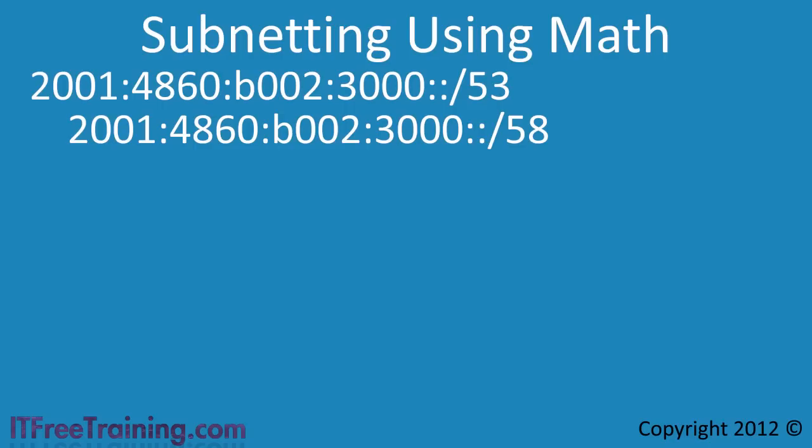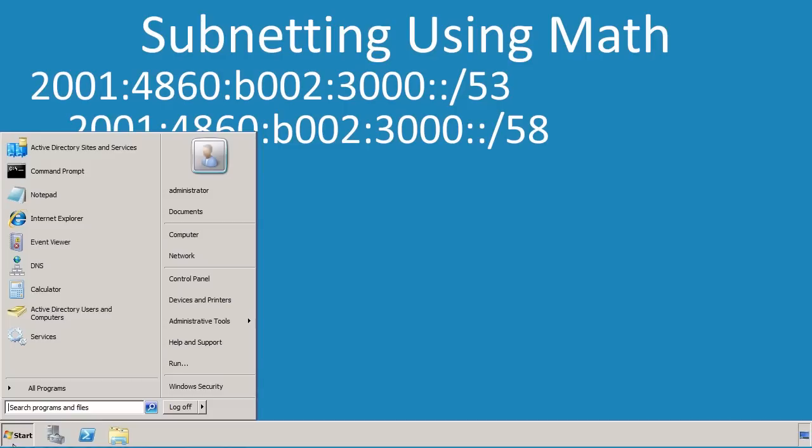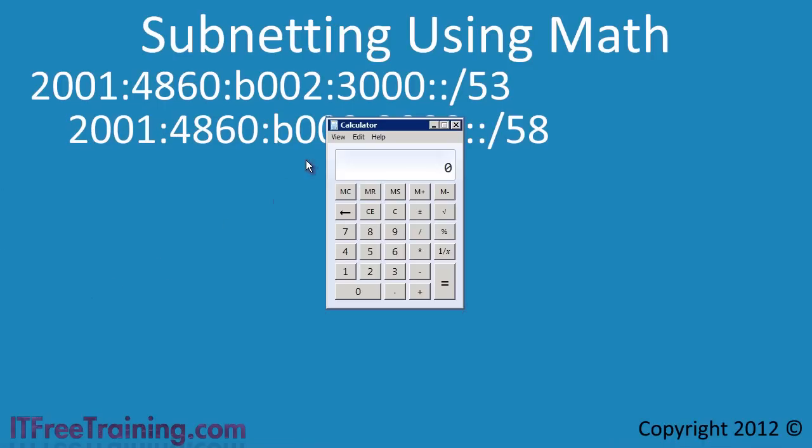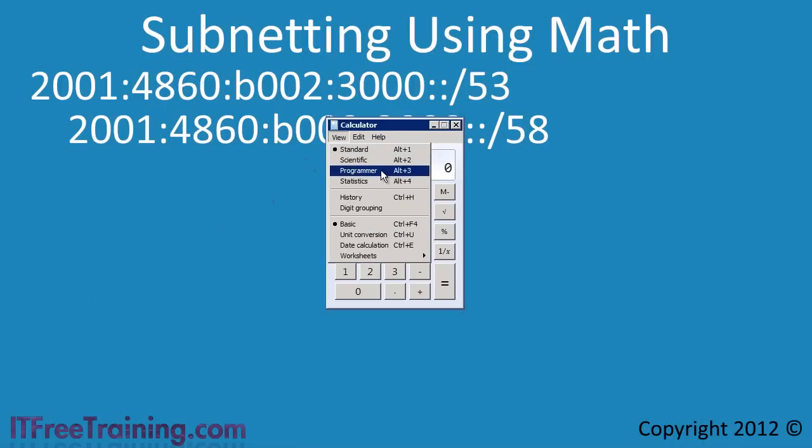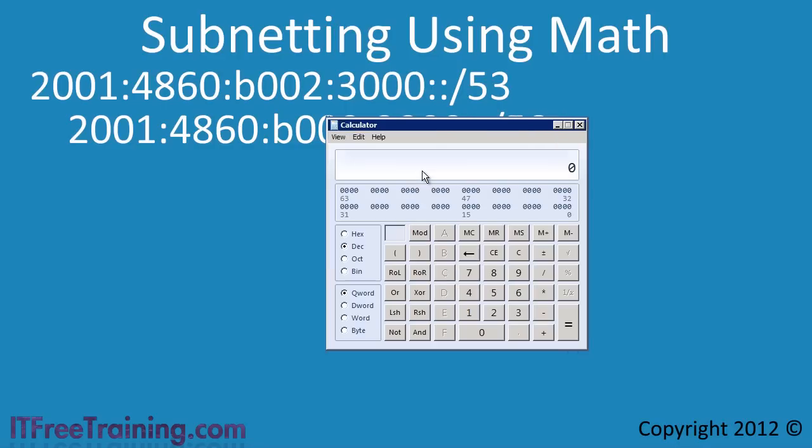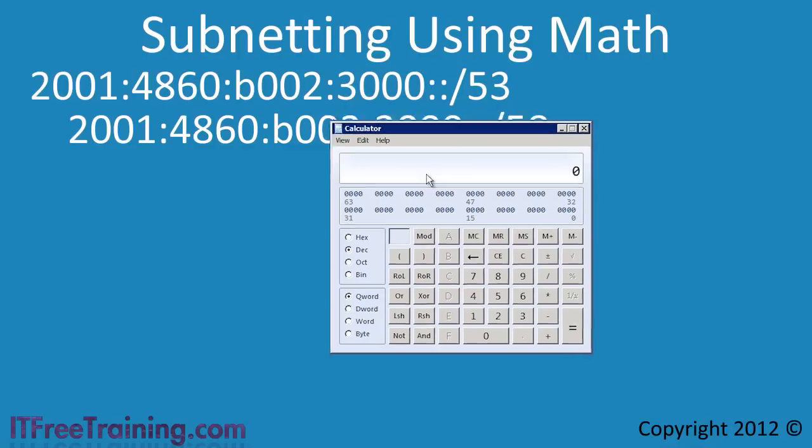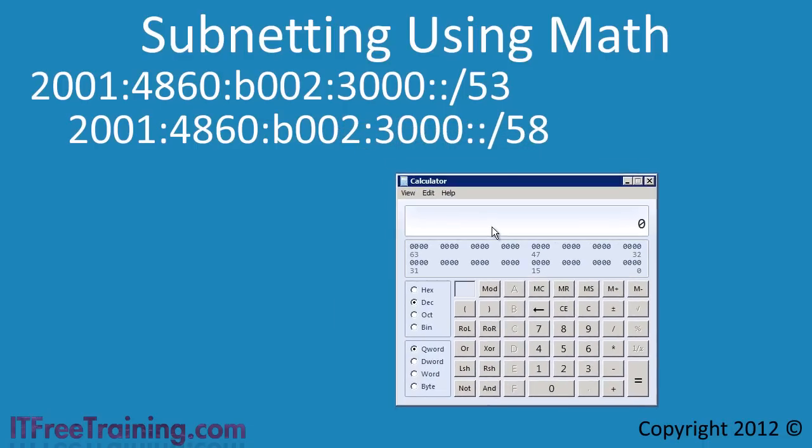In your exam you may have access to the windows calculator. Some exams allow it and some do not. If you do have access to the windows calculator there is a very fast way of working out this value. If I open windows calculator from the start menu, the first thing that I need to do is select programmer mode from the view menu. If you have an older version of the windows calculator this option may not be available, but you can get the same result selecting scientific mode.